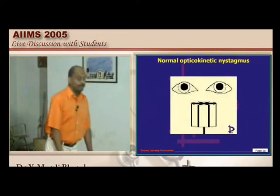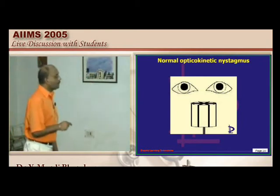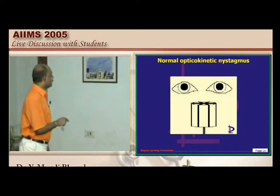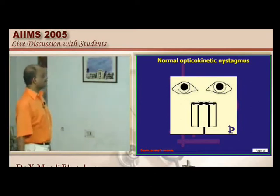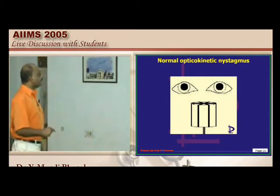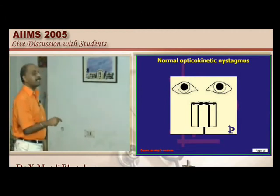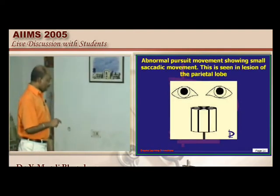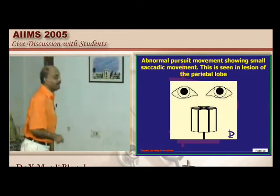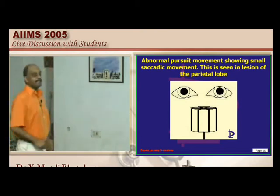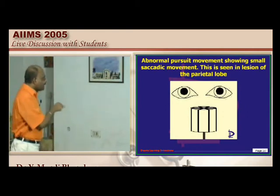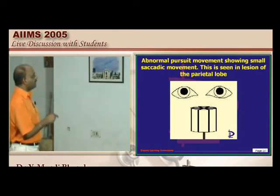Defective optokinetic nystagmus in the clinical question relates to parietal lobe involvement. Optokinetic nystagmus is tested with a rotating drum of white and black stripes — normally a nystagmus is elicited. In parietal lobe involvement, there is an abnormal pursuit with small, slow, delayed saccades instead of fast saccades — this is the abnormal optokinetic nystagmus seen in parietal lobe lesions.